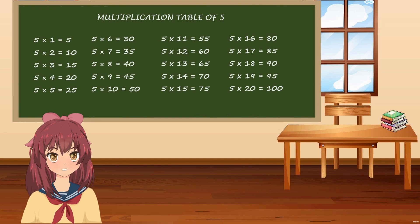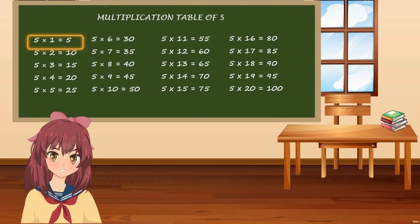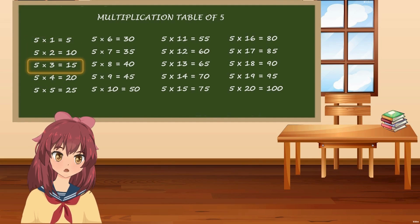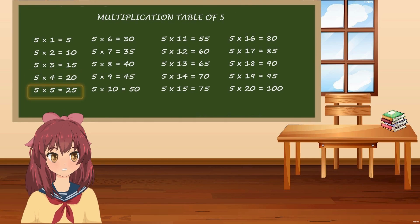Let's learn table of 5. 5 times 1 is 5, 5 times 2 is 10, 5 times 3 is 15, 5 times 4 is 20, 5 times 5 is 25.